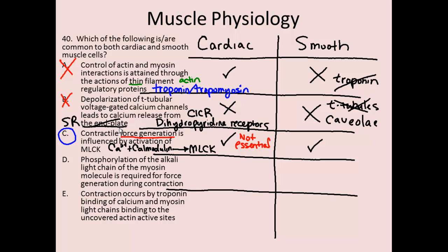Response D: phosphorylation of the alkali light chain of the myosin molecule is required for force generation during contraction. We just discussed that myosin light chain kinase does phosphorylate the alkali light chain of myosin. The key word here is 'required.' While this phosphorylation certainly increases contractile force generation for cardiac muscle, it is not required in cardiac muscle. However, it is required in smooth muscle. So this is true of smooth but not cardiac — we can eliminate D.